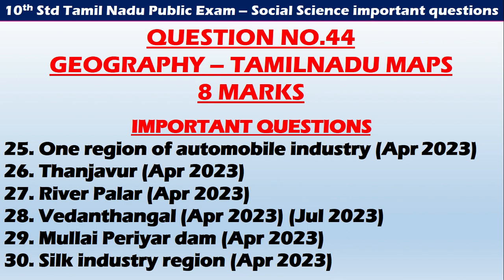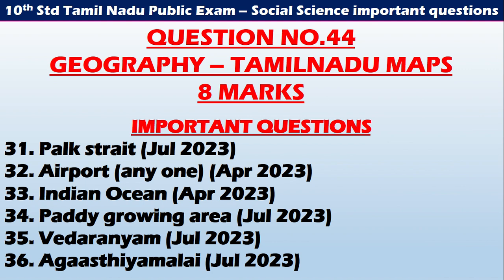Another 5 to 10 questions more: Region of automobile industry — April 2023. Thanjavur — April 2023. River Palar — April 2023. Vedanthangal — April 2023 and July 2023. Mullai Periyar Dam — April 2023. Silk industry region — April 2023. Park Street — July 2023. Airport — April 2023. Indian Ocean — April 2023. Paddy growing area — July 2023. Vaitheeswarankoil — 2023. Agasthiyar Malai — July 2023.